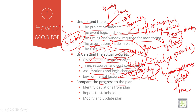Then compare the progress of the plan. You have to identify the deviations. For example, you have an objective or a scheduled track — when it is off the track, you should find out and report to stakeholders and owners.